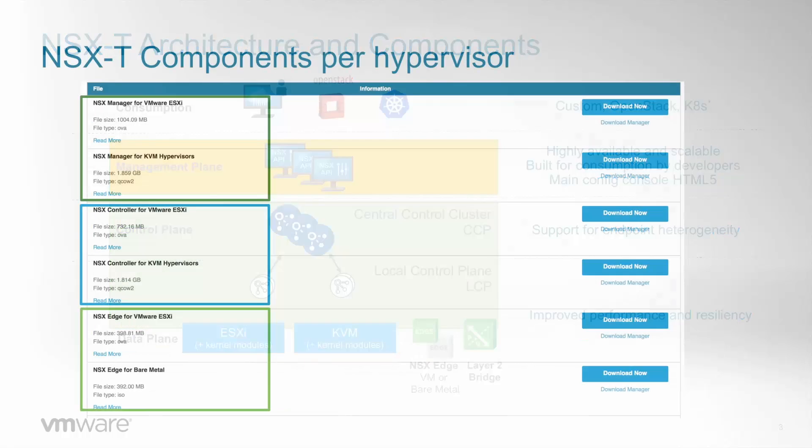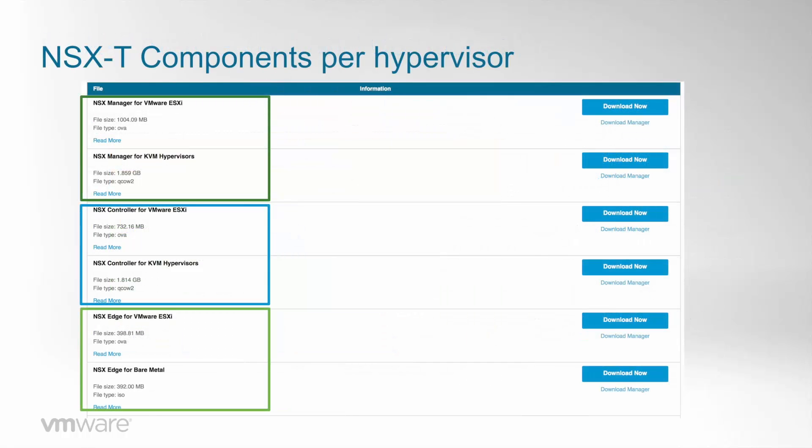If we look at the NSX-T download page, we can see that the NSX managers and controllers can run either on ESXi or KVM, and that the NSX Edge can be a VM on ESXi or a bare metal server.